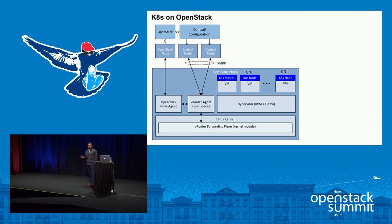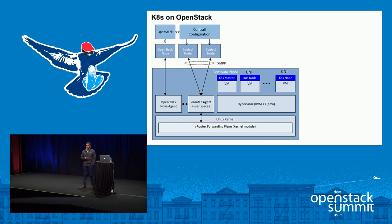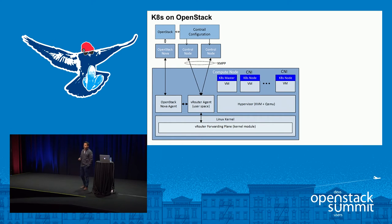What is the Kubernetes deployment model typically used in OpenStack? As you saw in the keynote today, you launch a bunch of VMs. In this case, you see three virtual machines which are launched, and each of them is provided a Kubernetes role — one of them is a Kubernetes master and the others are Kubernetes nodes. Nodes are where the Kubernetes pods get scheduled and run. Pods could equate to one container or multiple containers in one environment.